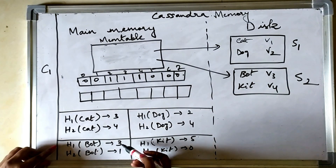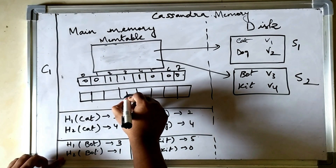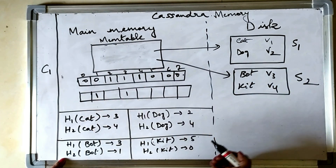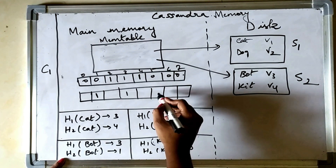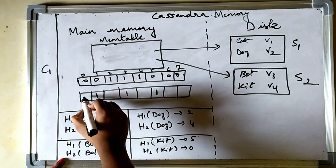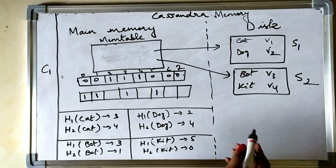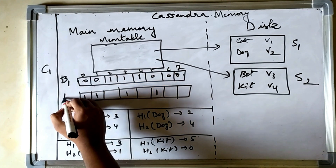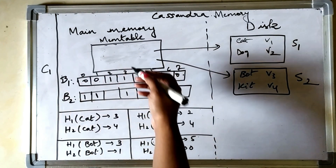Before flushing SS table 2, we calculate its bloom filter. H1(bot) = 3, so we set bit 3; H2(bot) = 1, so we set bit 1. Then H1(kit) = 5, so we set bit 5; H2(kit) = 0, so we set bit 0. This is how bloom filters are calculated for each SS table and stored in main memory.